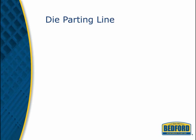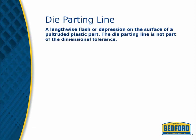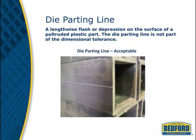Occasionally, specifications call for a pultrusion that is formed with a two-part die. A lengthwise flash or depression may form on the surface of the part where the top plate and the bottom plate of the die meet. This is an acceptable blemish as long as the line projection does not exceed the product's material thickness by more than roughly half a millimeter, and it should not create a sharp edge or have loose fibers.